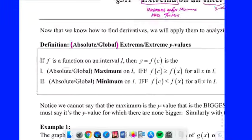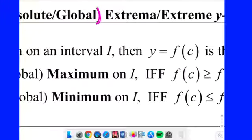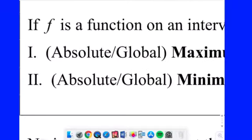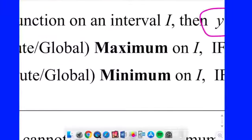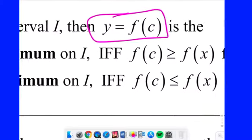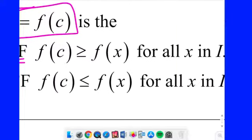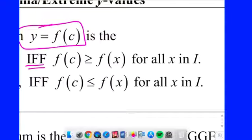So here is the definition. If F is some function on some interval I, it could be open, closed, half open, whatever, then y = f(c), that's the Y value, it's going to be defined as the absolute maximum value or the global maximum value or just the maximum value on that interval, if and only if, remember that's bidirectional, f(c) is greater than or equal to all the other f(x) values. That's another way to read that. That Y value is greater than or equal to all the other Y values on that interval. That would make sense, right?